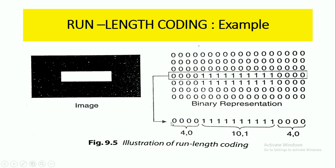The value is 0 — representing the long sequence of zeros in this particular line. This is how run length coding works, and by using it we can compress the image size.